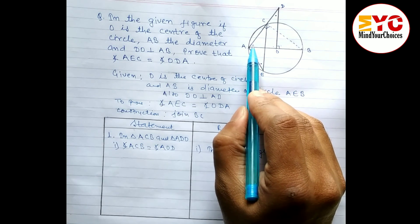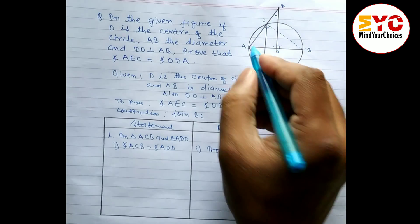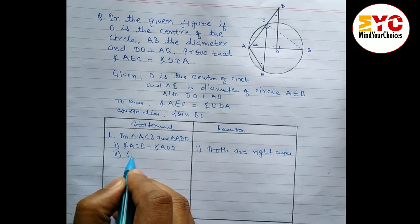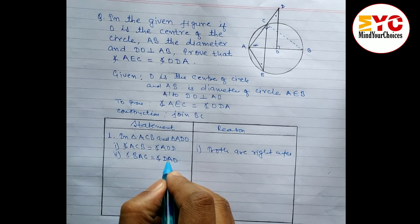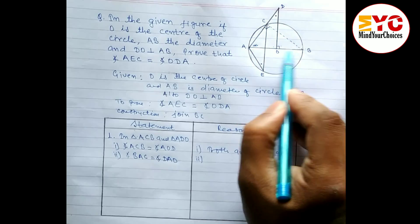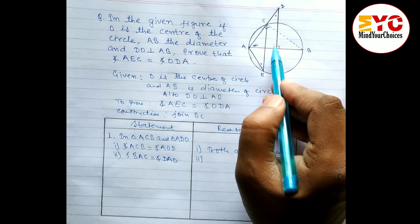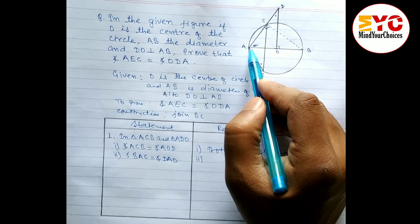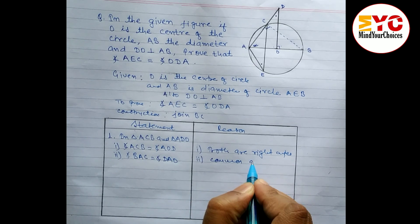In statement 2, angle BAC is common to both triangles — it appears in triangle ACB and also in triangle ADO as angle DAO or OAD. Both are the same. So we write angle BAC equals angle DAO, and the reason is it is a common angle.